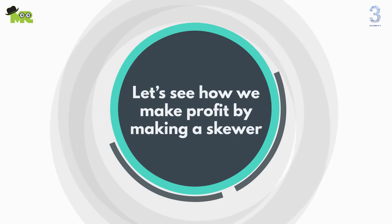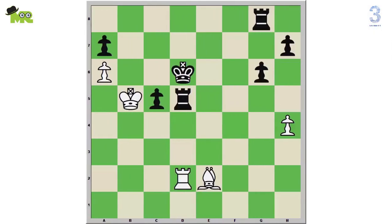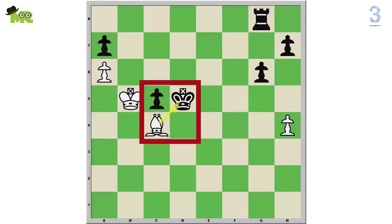Let's see how to make profit by making a skewer. At this position, the white d2 rook will capture the black d5 rook. Now the black d6 king will capture the white d5 rook. Then the white e2 bishop will move to c4 and give check to the d5 black king, making a skewer with the g8 black rook.